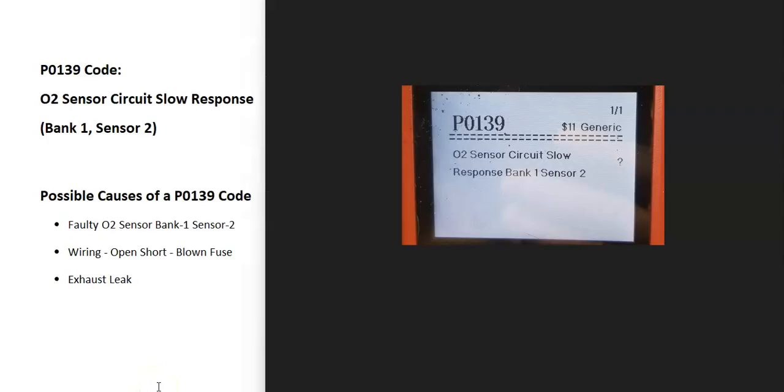Today I'm talking about a P0139 code, what it is and how you fix it. So what is a P0139 code? It's an O2 sensor circuit slow response bank one sensor two.